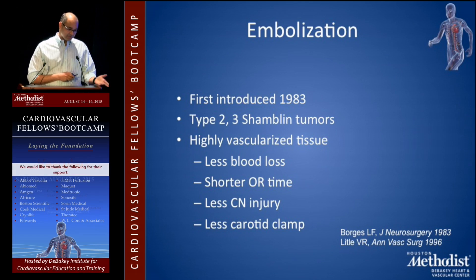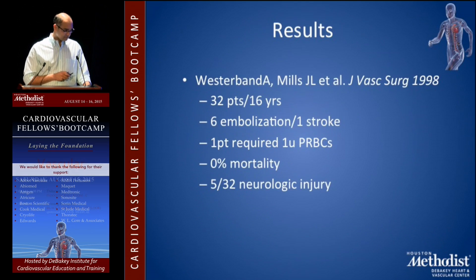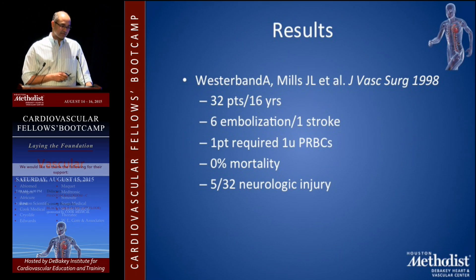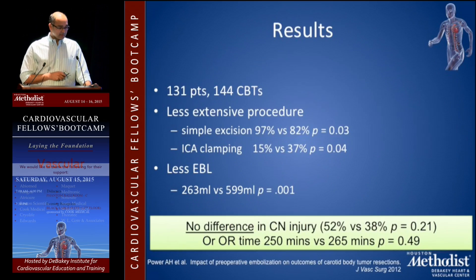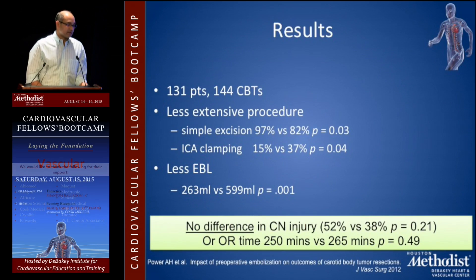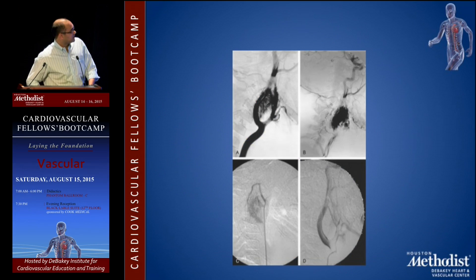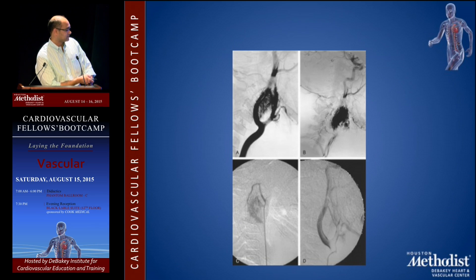A paper from Scottsdale showed decreased blood loss with embolization, low stroke rates, most patients needed only one unit of PRBCs, no mortality, and very few neurologic injuries. A larger Mayo Clinic Rochester study found the procedure was less extensive with shorter ICA clamping time and less estimated blood loss, but no difference in cranial nerve injury or OR time. So the reviews on preoperative embolization are mixed. The key is targeting the external carotid, specifically the ascending pharyngeal branch.